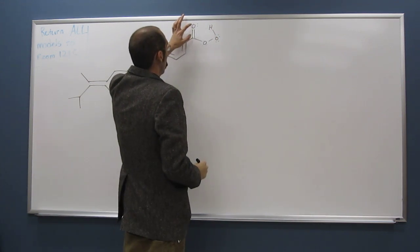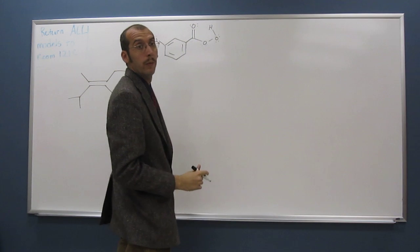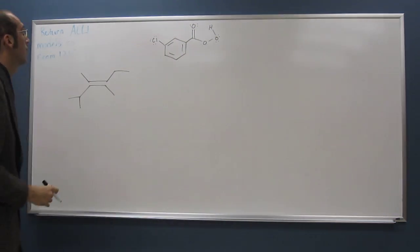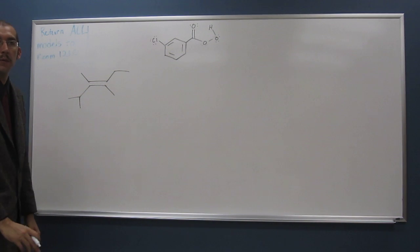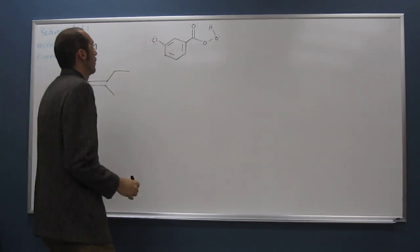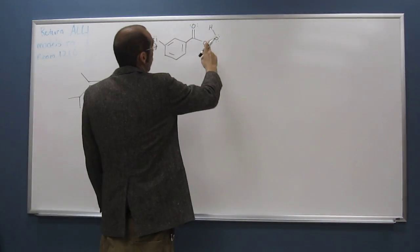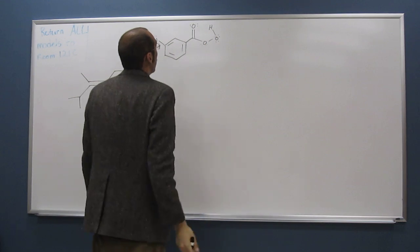So take the proton from the acidic proton and draw it like that. So you can kind of see we've got a one, two, three, four, five-membered ring there. Okay? So we're going to do an intermolecular acid-base reaction, as a matter of fact.